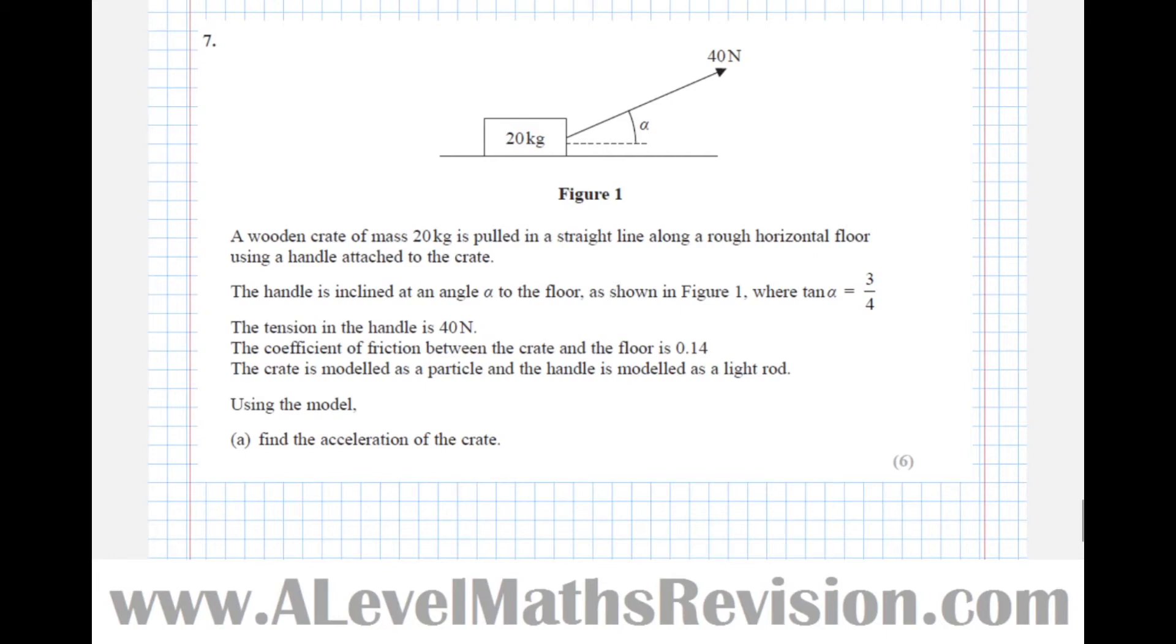So question 7 and this one's on coefficient of friction. It says a wooden crate of mass 20 kilograms is pulled in a straight line along a rough horizontal floor.